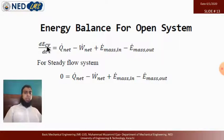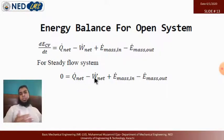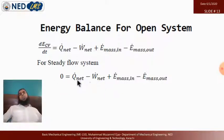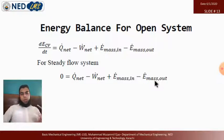For steady flow, dE_cv/dt equals zero, so: 0 equals Q-dot-net minus W-dot-net plus m-dot-in·theta-in minus m-dot-out·theta-out. Q-net and W-net individually may have different values, but their combined effect balances to zero net change. This equation allows us to calculate Q-net, W-net, and mass flow parameters, as you will see in the next numerical.